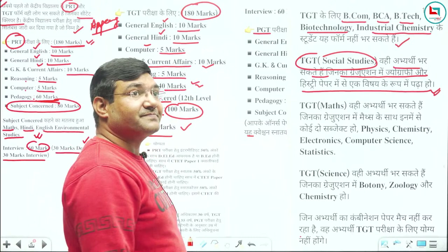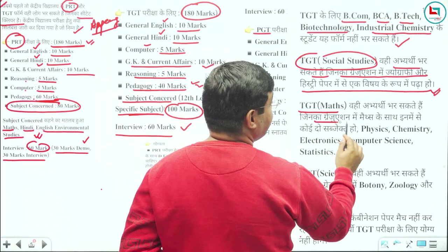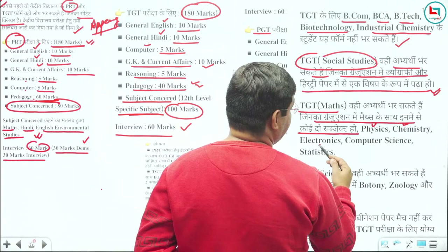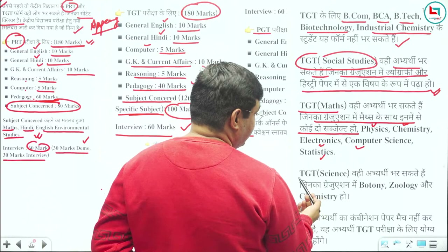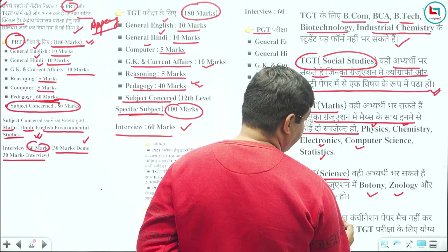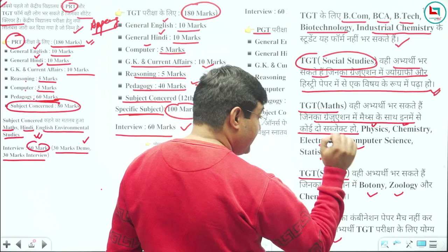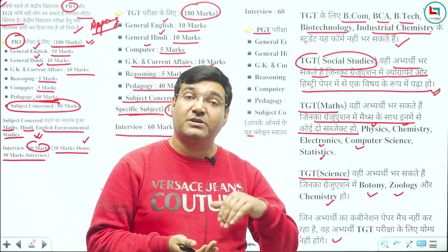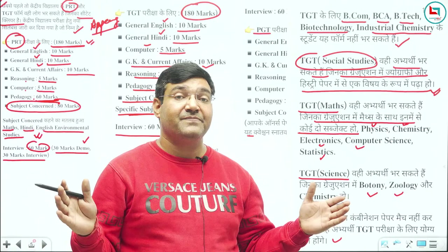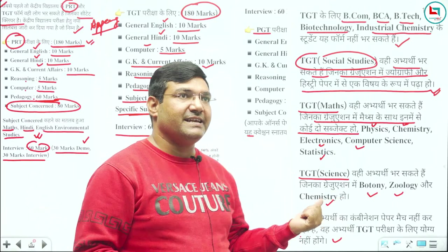TGT Math requires graduation in Math. TGT Science in graduation includes Botany, Geology, Chemistry. These subject combinations must match. TGT subject combination — if you have the right subject file, I will put it on the Telegram channel. You can see it completely in English. Subject combination matching is necessary.